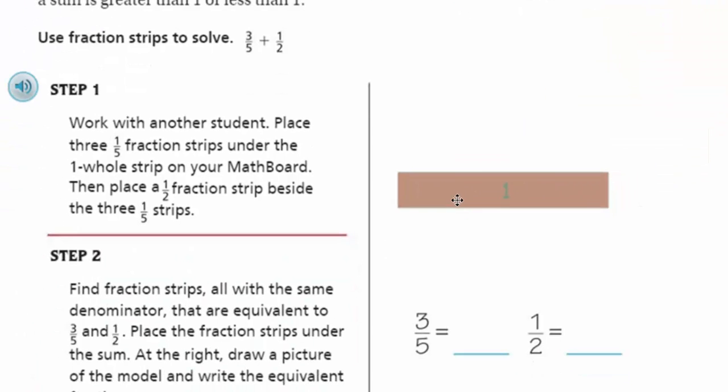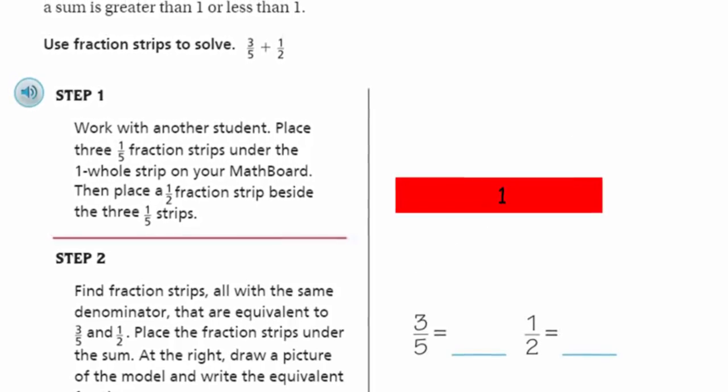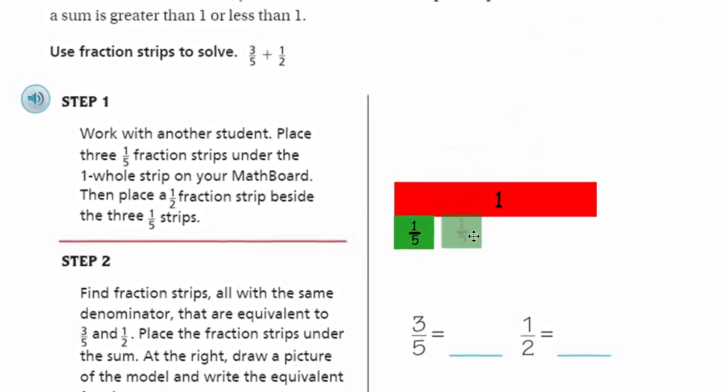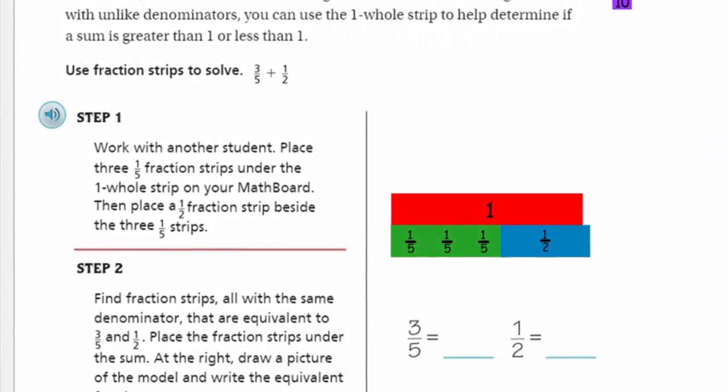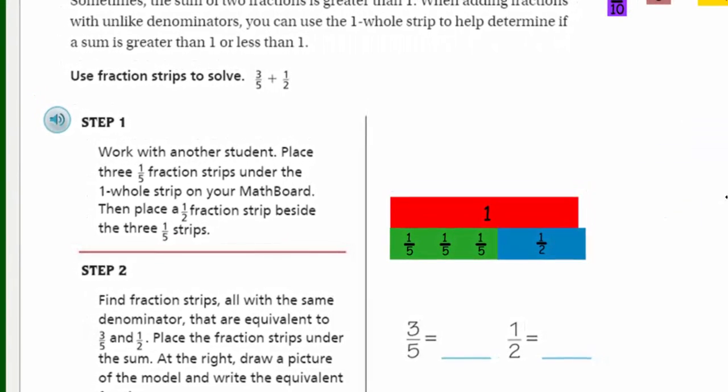I'm going to take my one-whole strip right here, and I'm going to get three-fifths, so I'm going to grab one. Here's number two, three, and then I'm going to grab my one-half. Now, by looking at that, I can see immediately that it looks like three-fifths plus one-half is going to be greater than one whole.